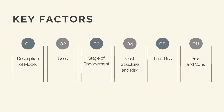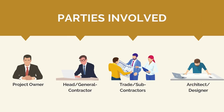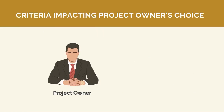So why would a client choose to use a given procurement model? As we look at each of these different contract models, we'll look at how the relationship between all the different parties are structured — the project owner, head contractor, trade or subcontractors, and the architect and designer. The choice and logic that drives a project owner to use one model over another is impacted by a broad range of factors.